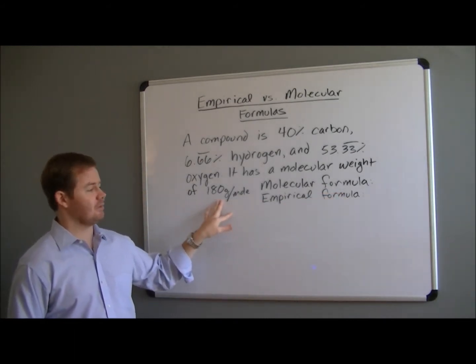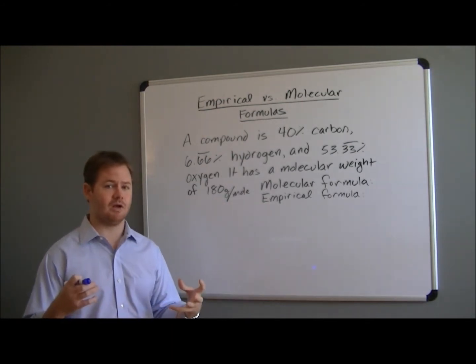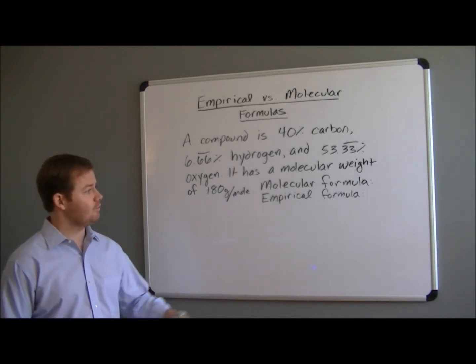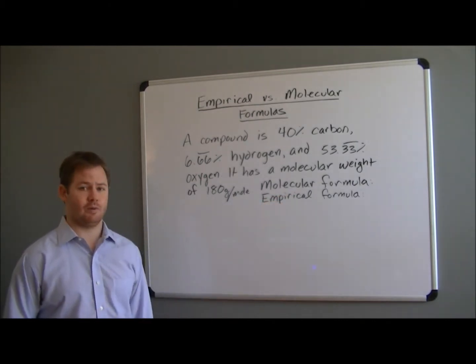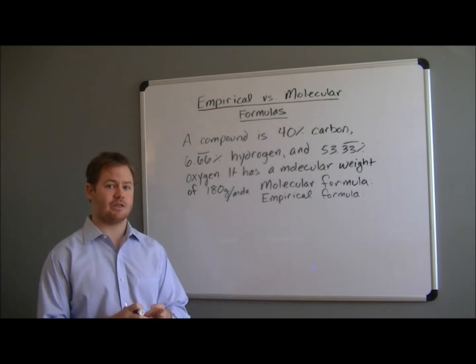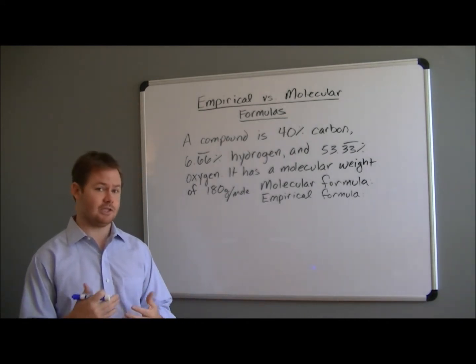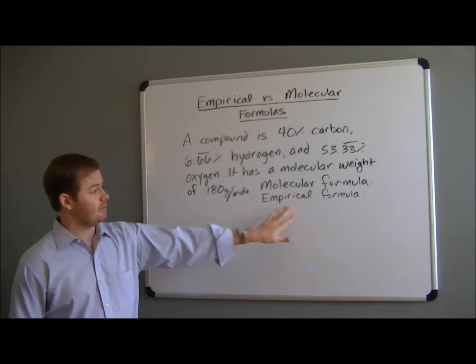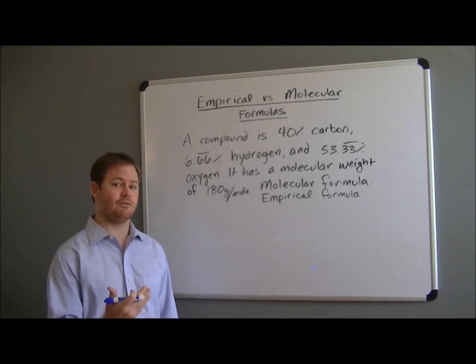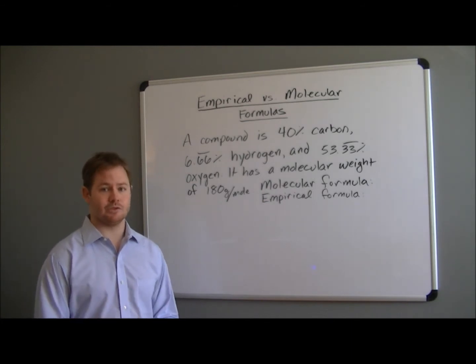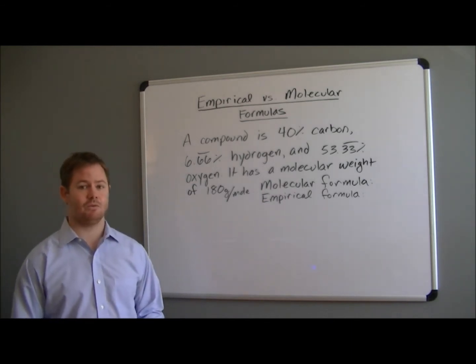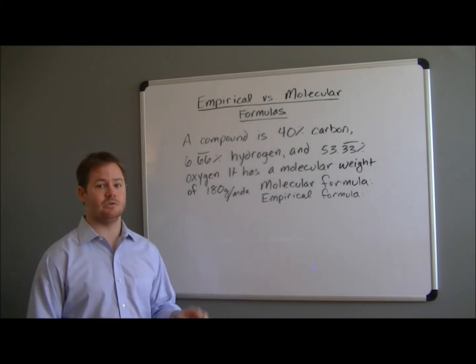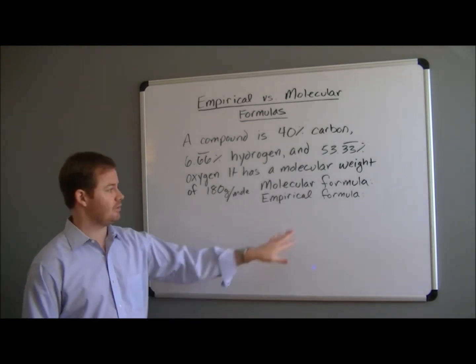Since they give us the molecular weight of the actual molecule, the entire compound, that means that the formula we're able to find will be the molecular formula. Your molecular formula is the number of atoms of each different element that you have in an entire compound. The empirical formula is going to be that molecular formula fully reduced. So for example, if a compound was C2H4, you can reduce that to CH2 for the empirical formula.